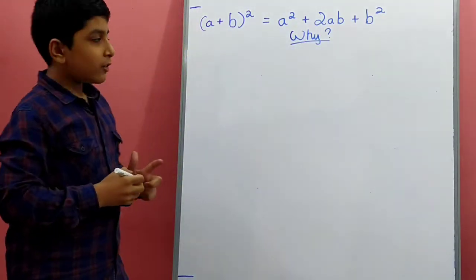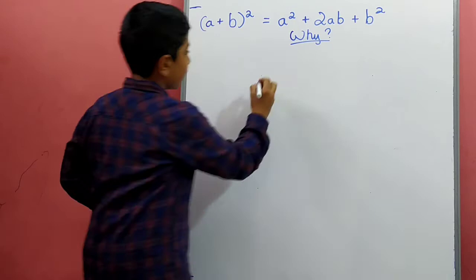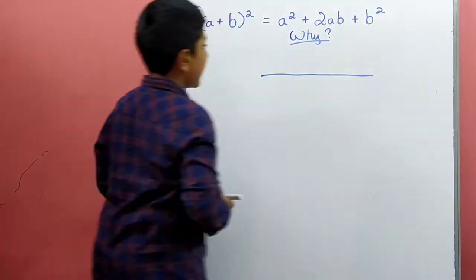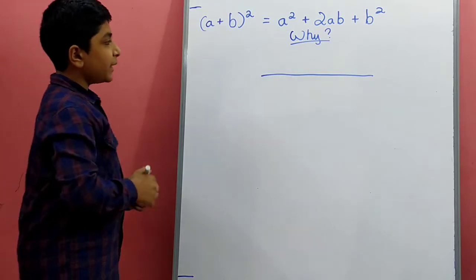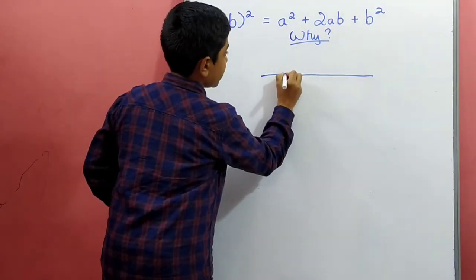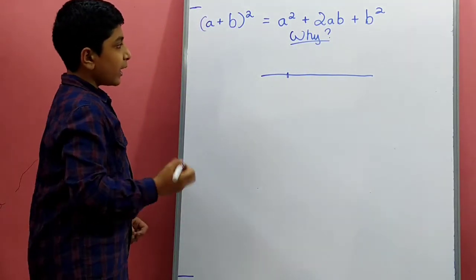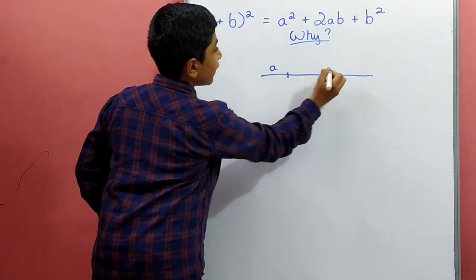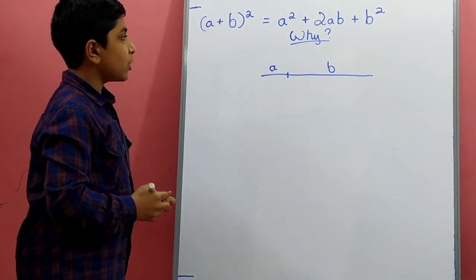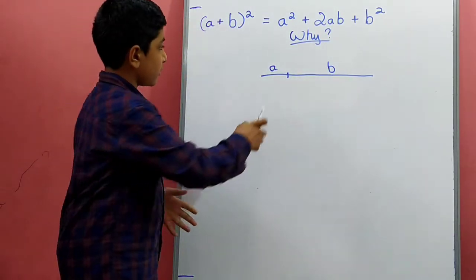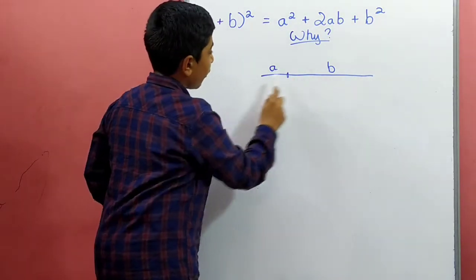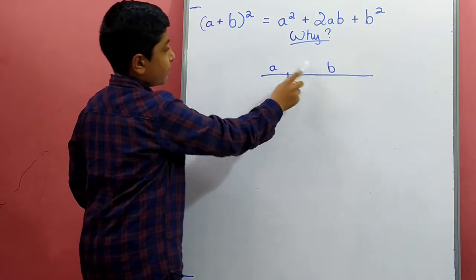So for that, first let's draw a line. And then let's take an arbitrary point over here on the line. And then let's call this as a and this as b. So this length of the line is a plus b.